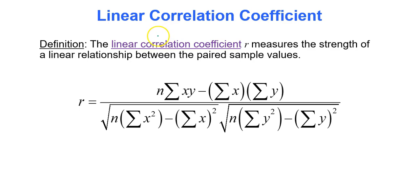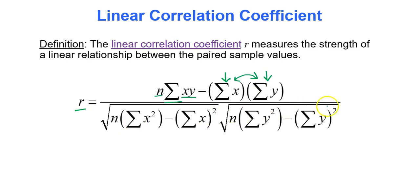To calculate the linear correlation coefficient r, which is important for conducting our hypothesis test, you use the following formula. R equals: multiply the sum of all x times y products by the sample size n, then subtract the product of the sum of all x's and the sum of all y's. There's a lot of work involved, but we're going to use technology. I wanted you to understand and appreciate what technology is doing for you — that's why I showed you this formula.